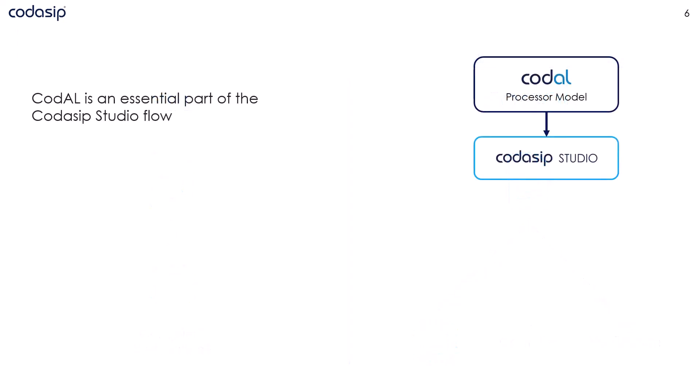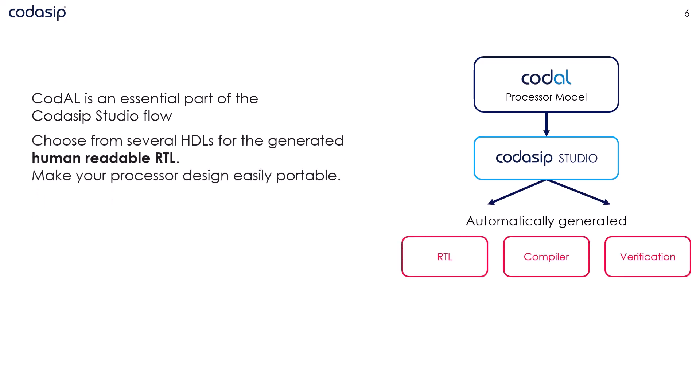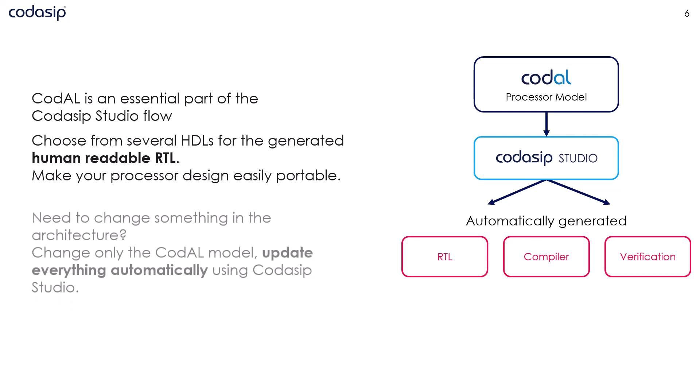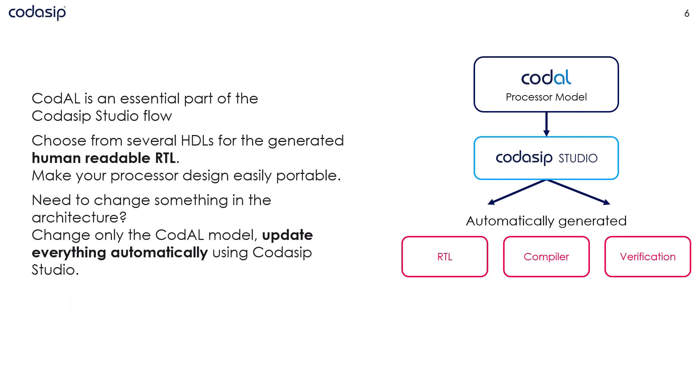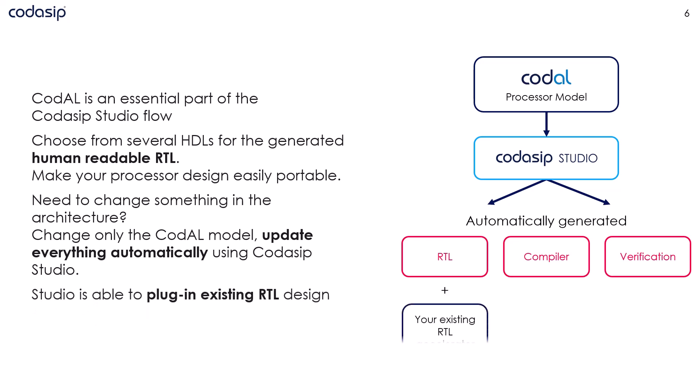The automation is delivered through Codasip Studio, where the Codal language plays an essential role. The processor Codal model is processed by Studio, which then generates the RTL implementation in the selected HDL, but also a complete compilation toolchain including various libraries, verification environment, and other products. Any change you need to make to your design is done only in the Codal model, and Codasip Studio then automatically modifies all its products. If you think your specific accelerator would be more efficiently implemented in RTL, or maybe you already have it implemented, Studio allows you to interconnect your RTL design with the RTL generated from Codal.